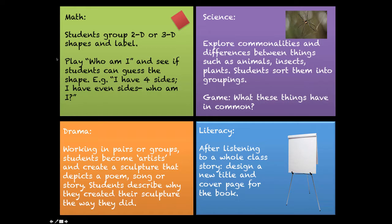Here we have some examples of activities that involve abstraction in other learning areas. For example, in maths, students could group 2D or 3D shapes and label them, or play a guessing game to figure out what shape something generally might be. In science, students could explore commonalities and differences between things such as animals, insects, and plants, and sort them into different groupings. In drama, students could work in pairs or groups to become artists and create a sculpture that depicts a poem, a song, or a story, then describe why they created their sculpture the way that they did.